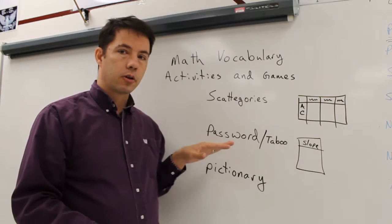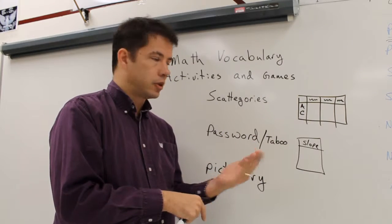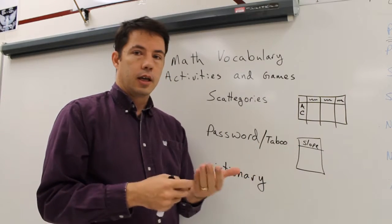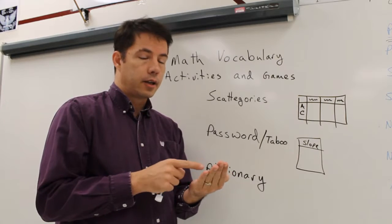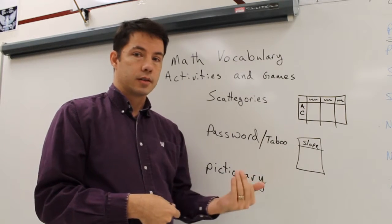Password and taboo, this is generally where someone has a card and they read the word, so in this case they read slope, but they don't read it out loud, they read it and they try to give clues and their partner guesses the word.